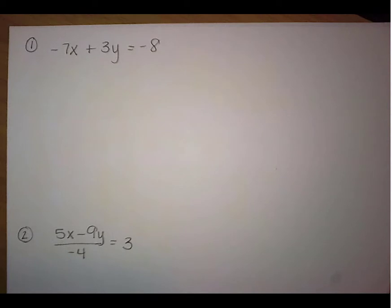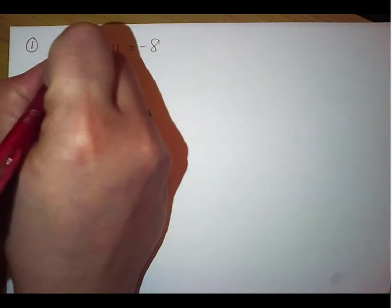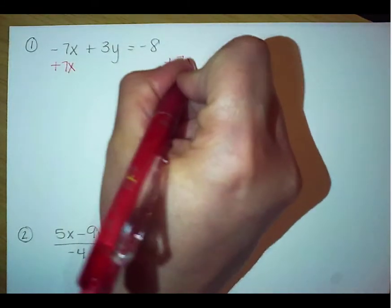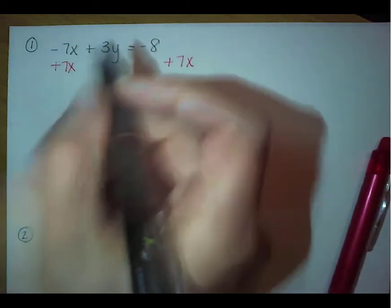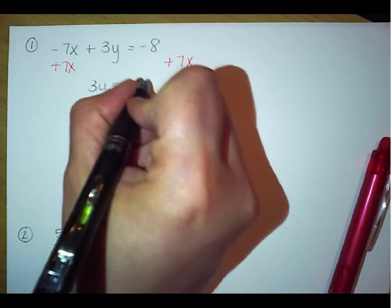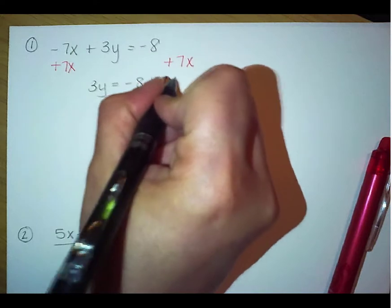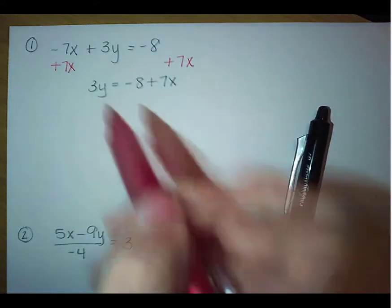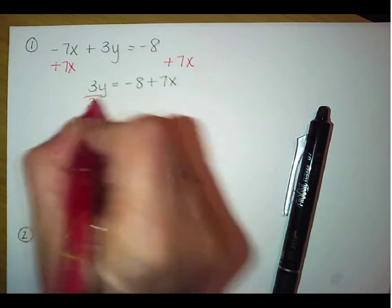We've got negative 7x plus 3y equals negative 8. We're solving for y. So the first thing we're going to do is add 7x to both sides. So we should get 3y equals negative 8 plus 7x. The next thing we're going to do is divide both sides by 3.